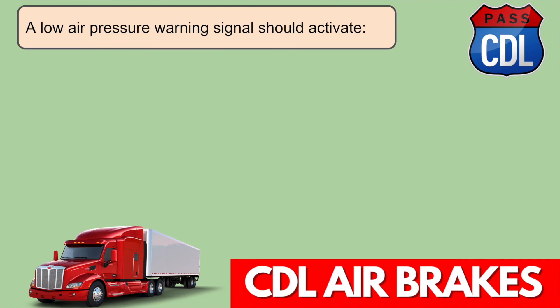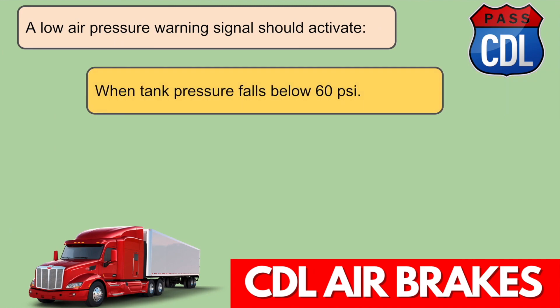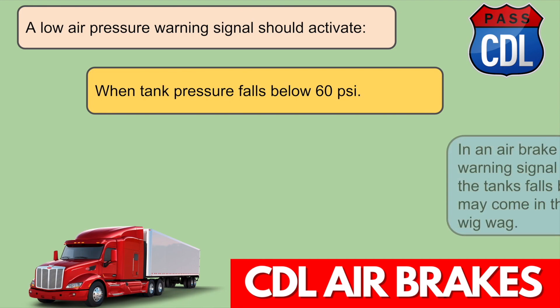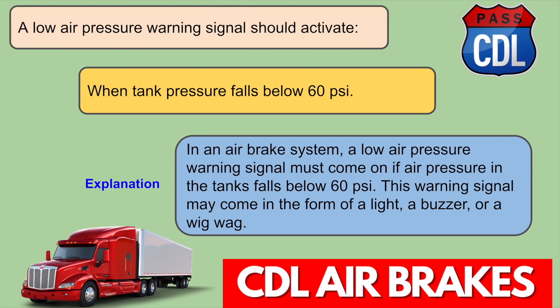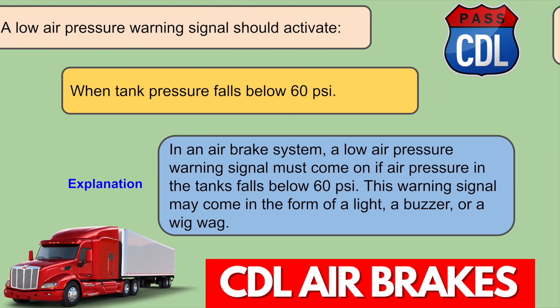A low air pressure warning signal should activate when tank pressure falls below 60 PSI. In an air brake system, a low air pressure warning signal must come on if the air pressure in the tanks falls below 60 PSI. This warning signal may come in the form of a light, a buzzer, or a wigwag.